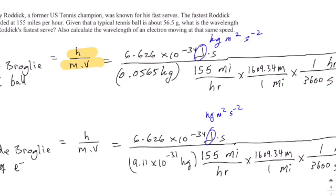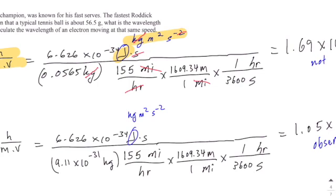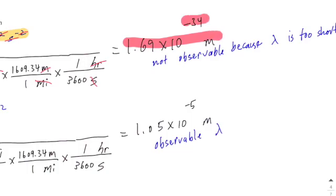For this type of problem, remember that the joule — which is the unit of Planck's constant — is the same as kilogram meters squared per second squared. This becomes useful because you want to cancel units with the denominator's mass and velocity. Writing it as kilogram meters squared per second squared, you can cancel the kilogram with the kilogram at the bottom. Convert the mass to kilograms and the miles per hour to meters per second. The seconds and one meter cancel, leaving you with the unit of wavelength: meters. You get 1.69 times 10 to the minus 34 meters.